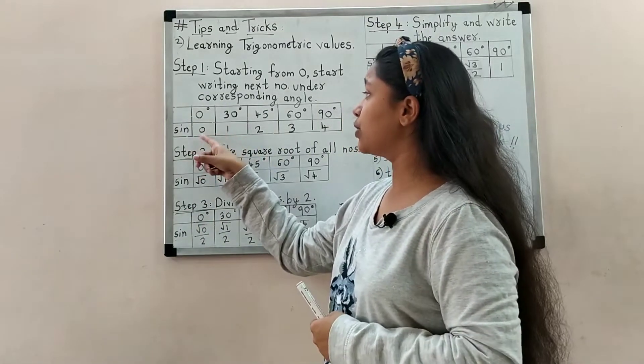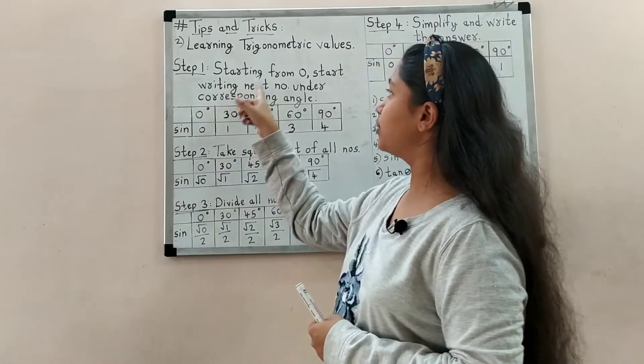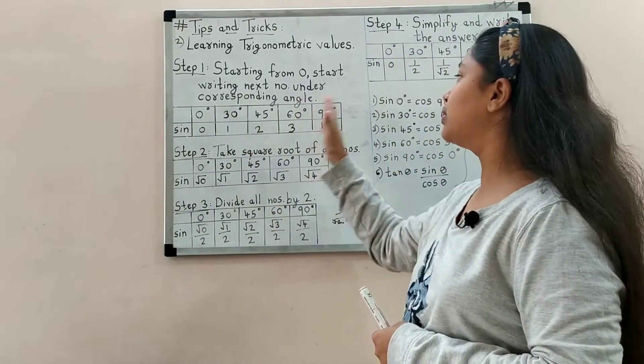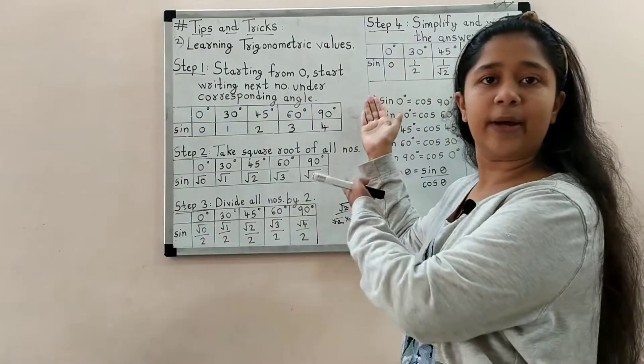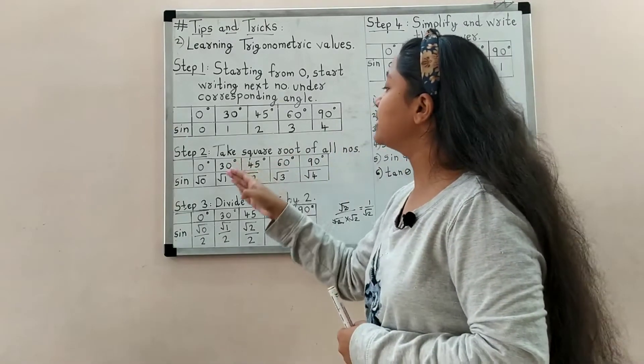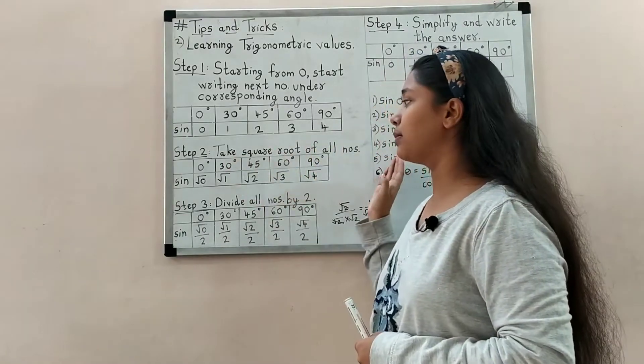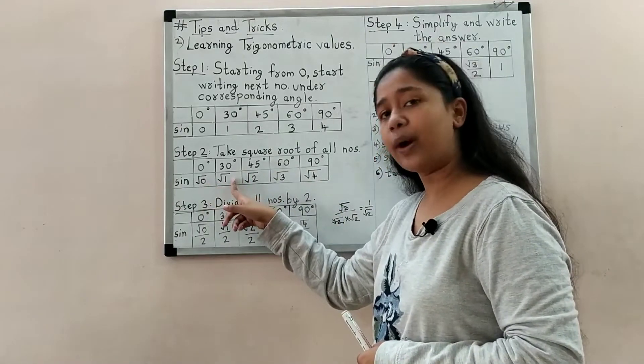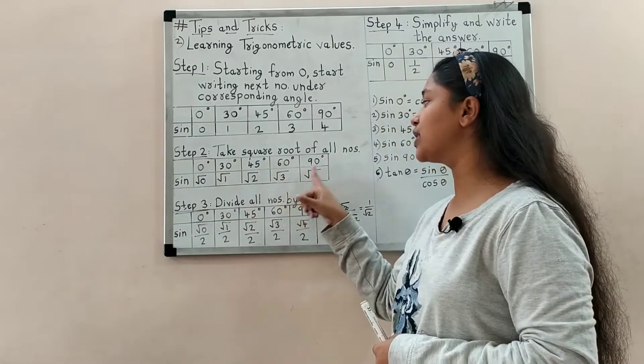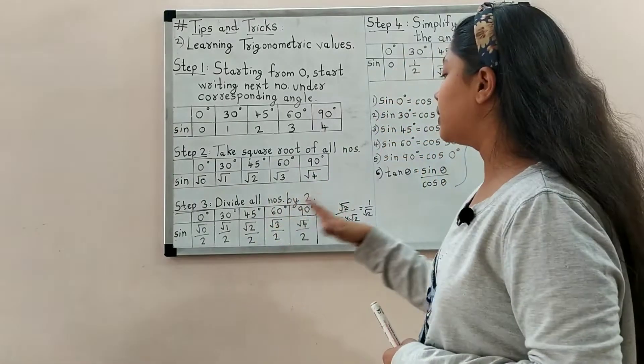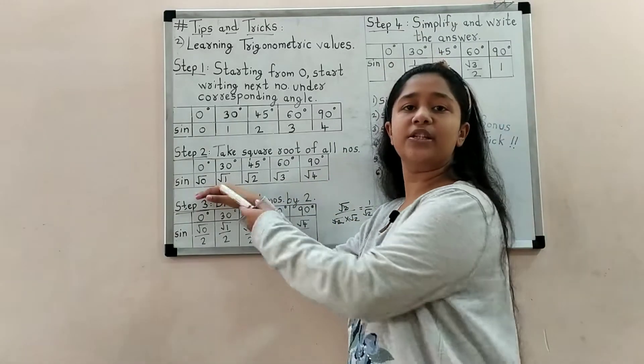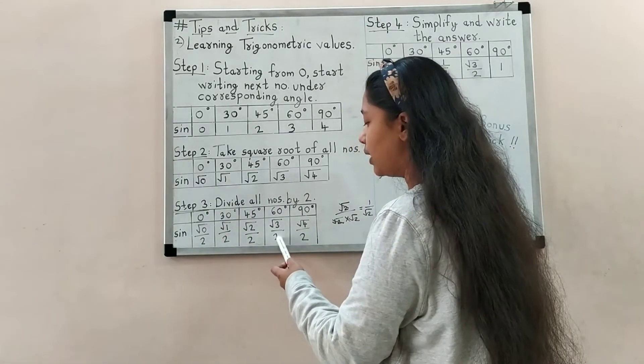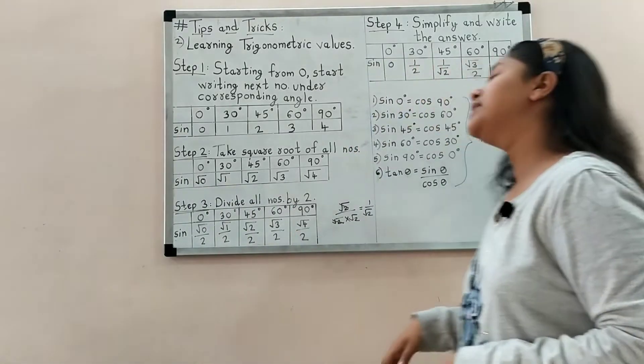For sin: write 0, 1, 2, 3, 4 under the angles. Start from 0 and write the next number. Don't write further because we have 5 angles. Step 2 says: take square root of all numbers. Take square root of 0, 1, 2, 3, and 4. Step 3 says: divide all numbers by 2. Whatever you have taken square root of, divide by 2.